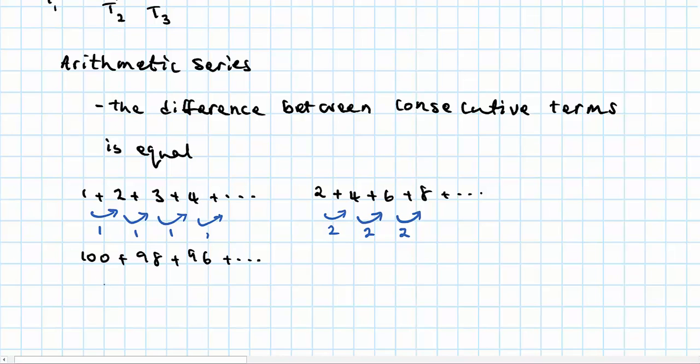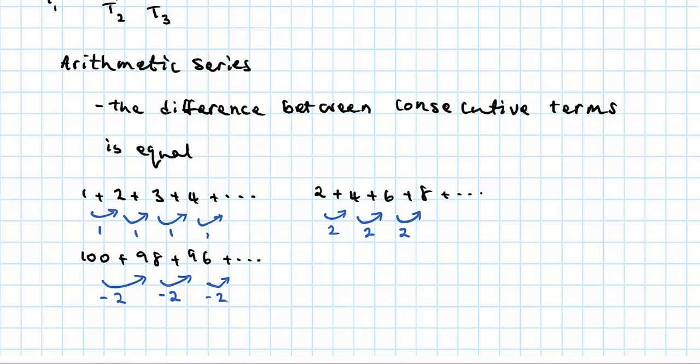So in this case, the differences are negative two, because every time we're taking away two to get the next term. We've seen this before. We were introduced to it much earlier in year seven, even earlier at primary school.